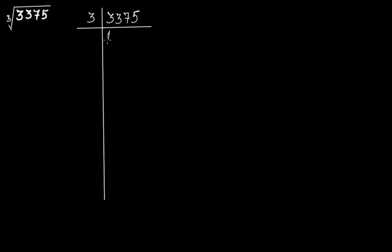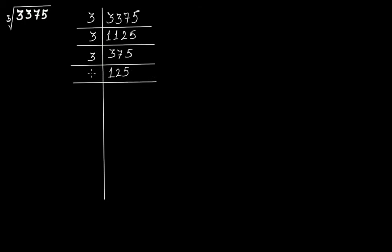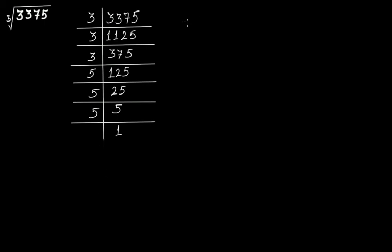So dividing 3,375: 3,375 ÷ 3 = 1,125, 1,125 ÷ 3 = 375, 375 ÷ 3 = 125, 125 ÷ 5 = 25, 25 ÷ 5 = 5, 5 ÷ 5 = 1. So 3,375 can be expressed in terms of its prime factors as 3 × 3 × 3 × 5 × 5 × 5.